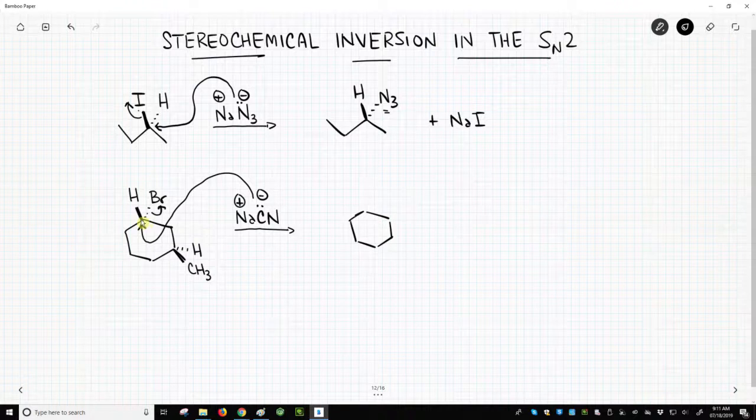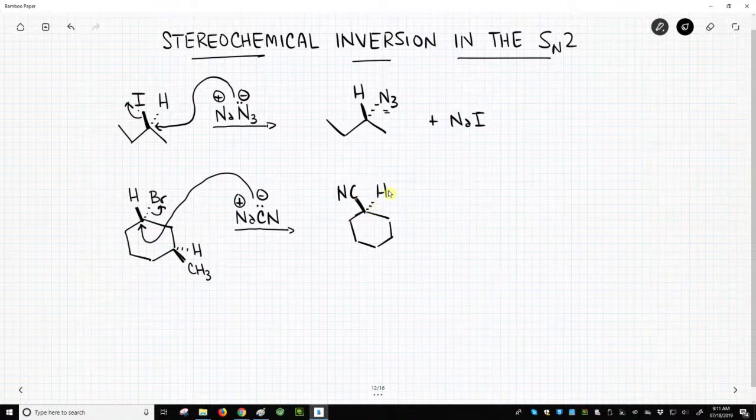we will draw this top stereocenter with the cyano group being on the top face, and the hydrogen has been pushed down to be hashed.